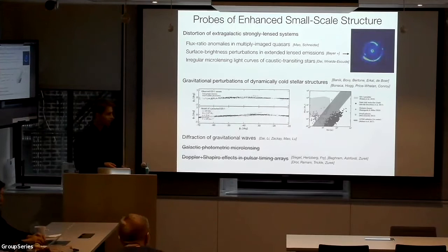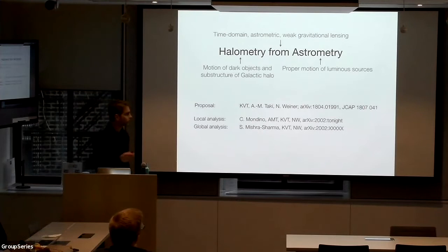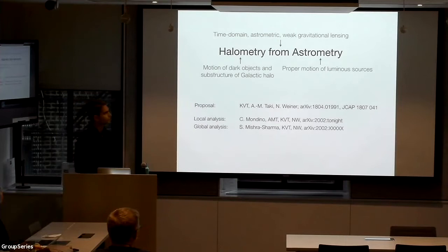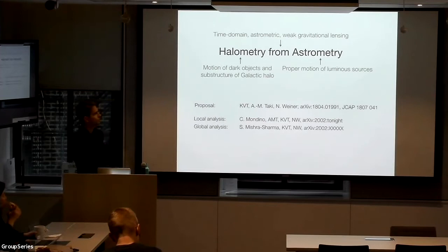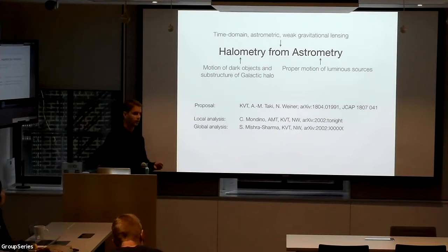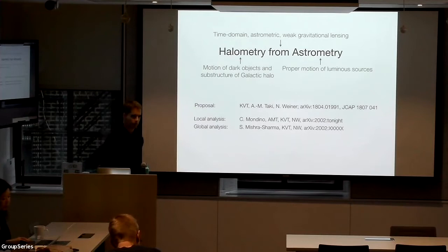We have a complementary method that will increase in sensitivity over time by a very large amount. This was a proposal written with Neil Weiner and graduate student Ana Maria Taki, now a postdoc at Oregon, that we called haloometry from astrometry. We think you can leverage the giant leap in precision from current astrometric surveys — the discipline of tracking the location and motion of luminous sources — to do the same for dark structures. We propose doing this with time-domain astrometric weak lensing, looking for time-dependent effects in the angular deflection of weakly lensed stars.